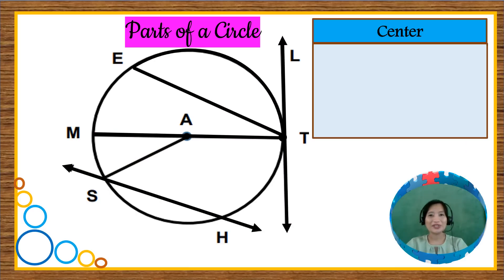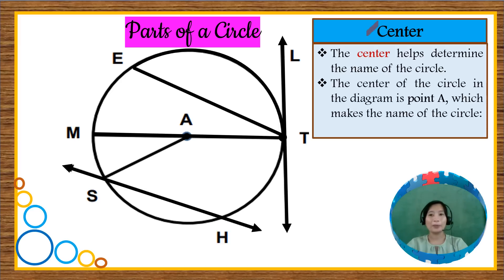We are going to check your responses as we go over the different parts of the circle. The first one here is the center. The center helps us determine the name of the circle as we have learned a while ago. For this diagram on the left, we know that the center is point A. So we call this circle as circle A.